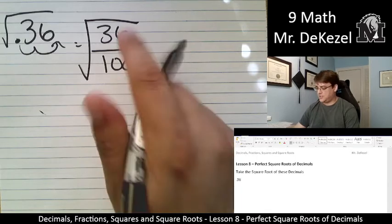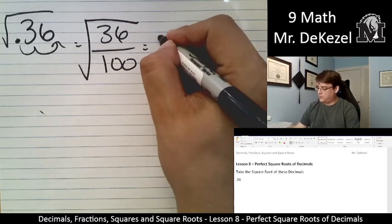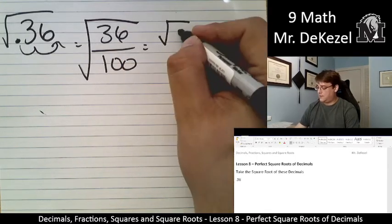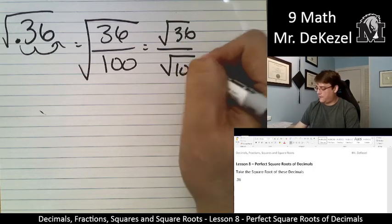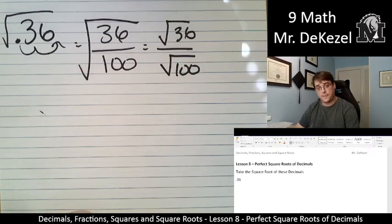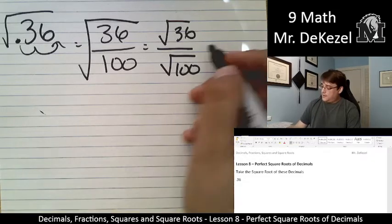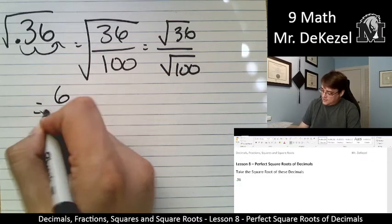And I know the square root of both 36 and 100. The root of 36 over the root of 100. So that is 6 out of 10.